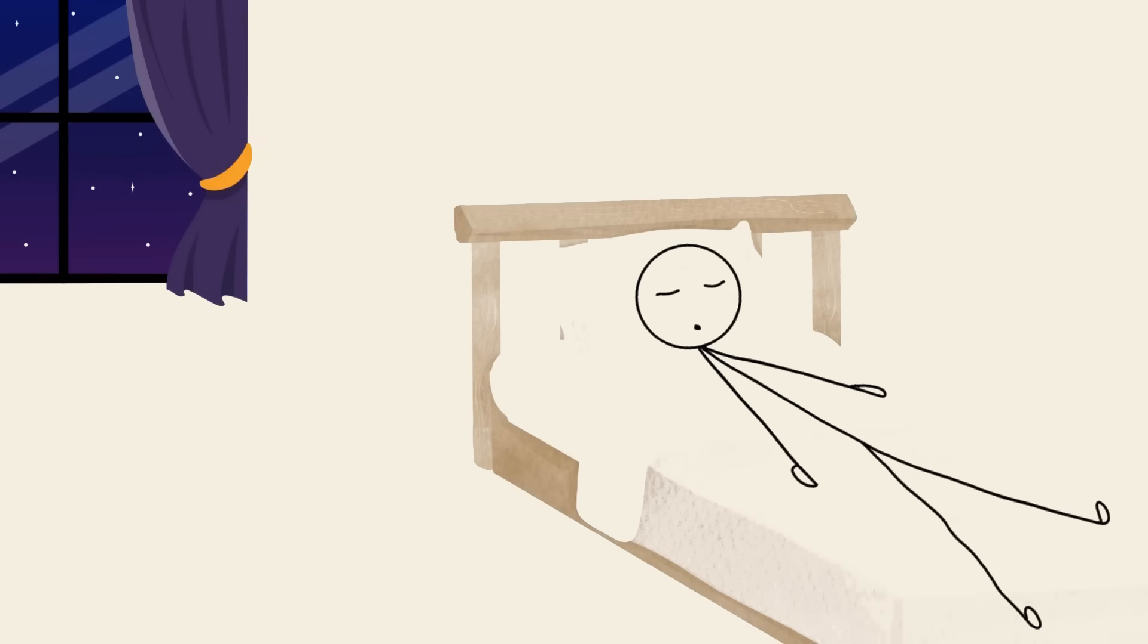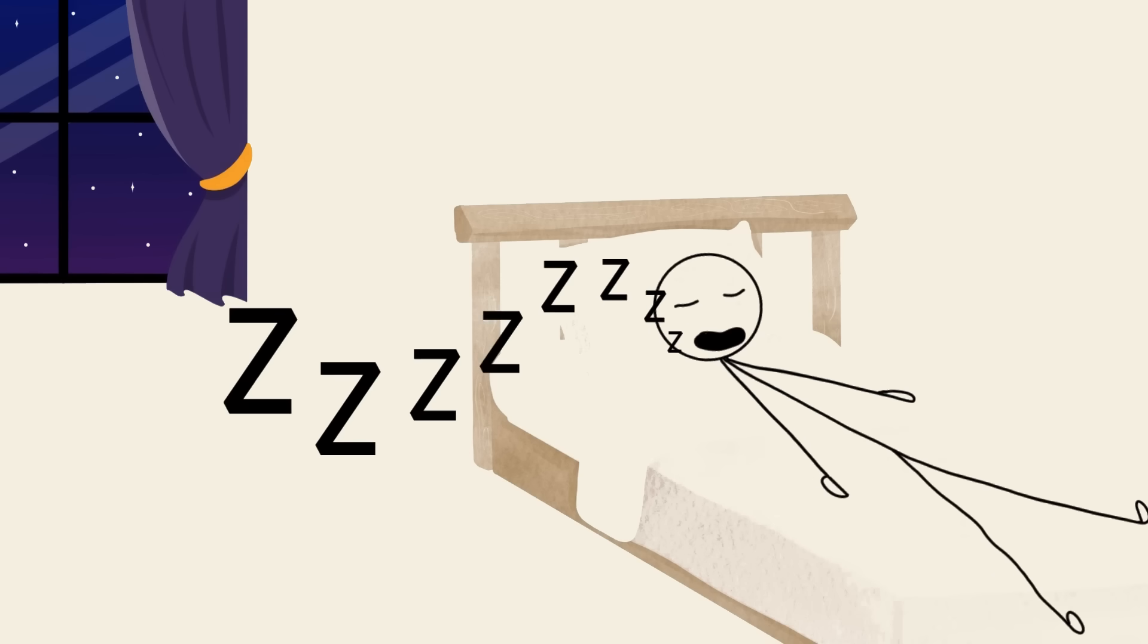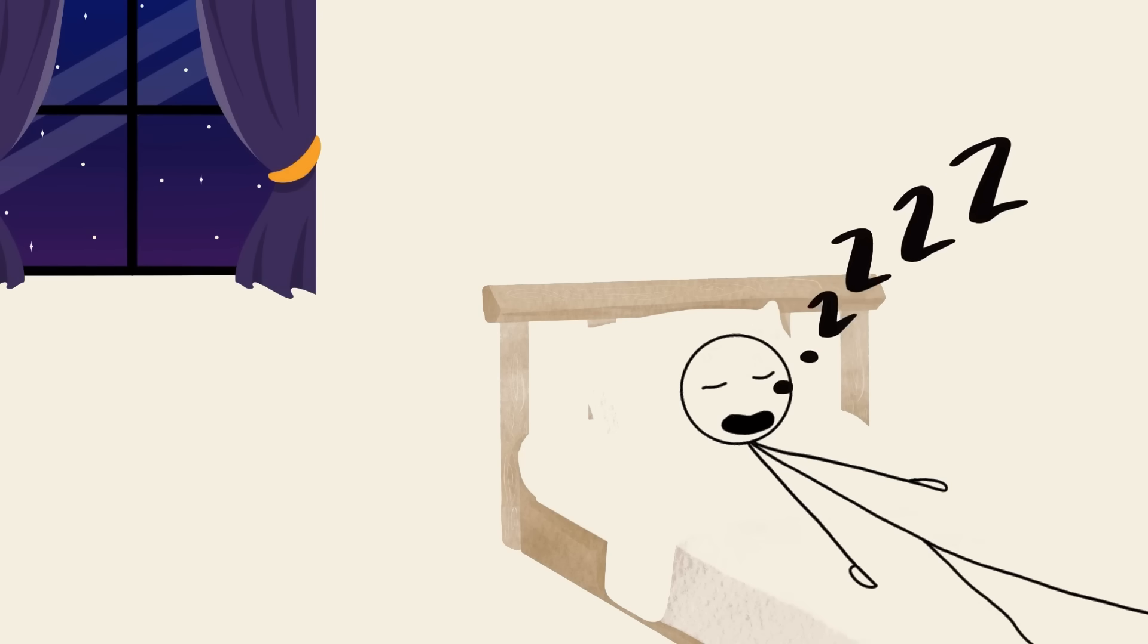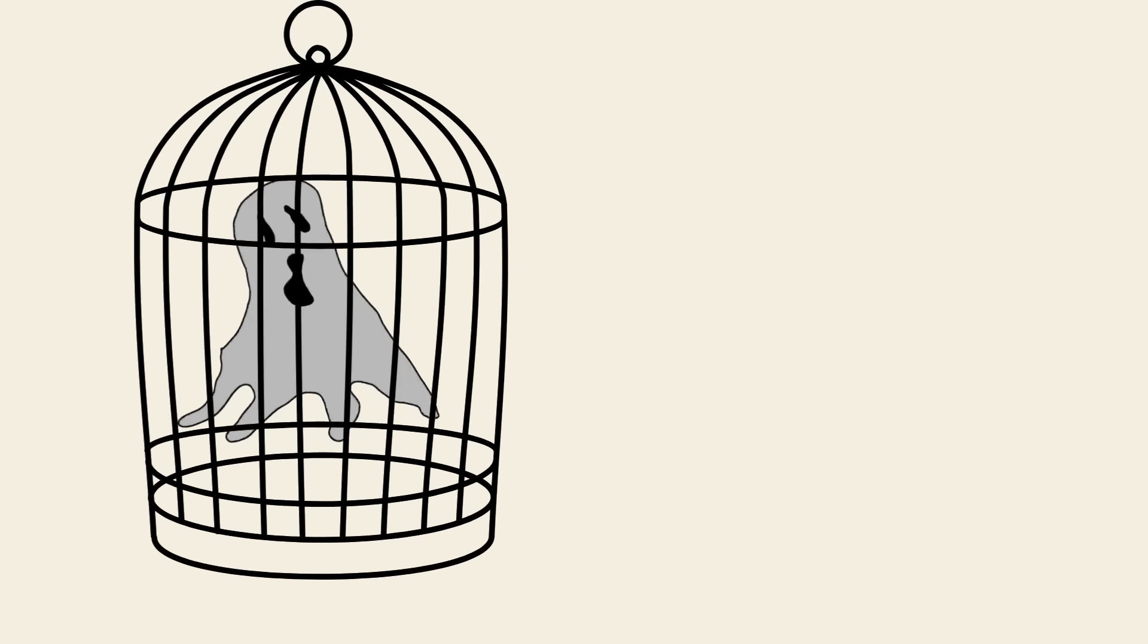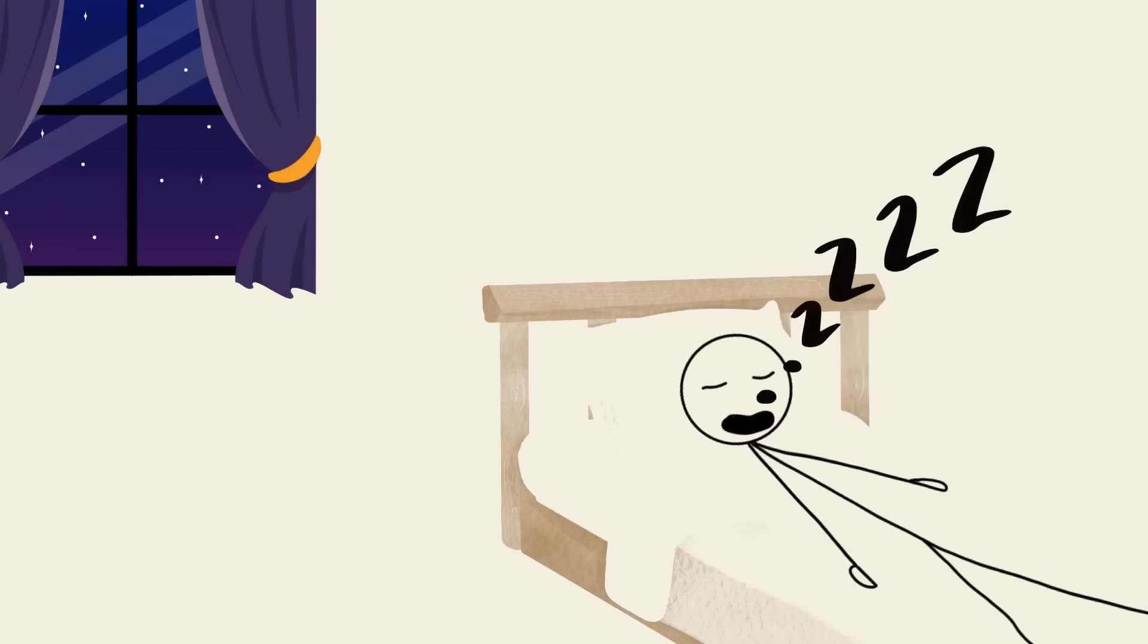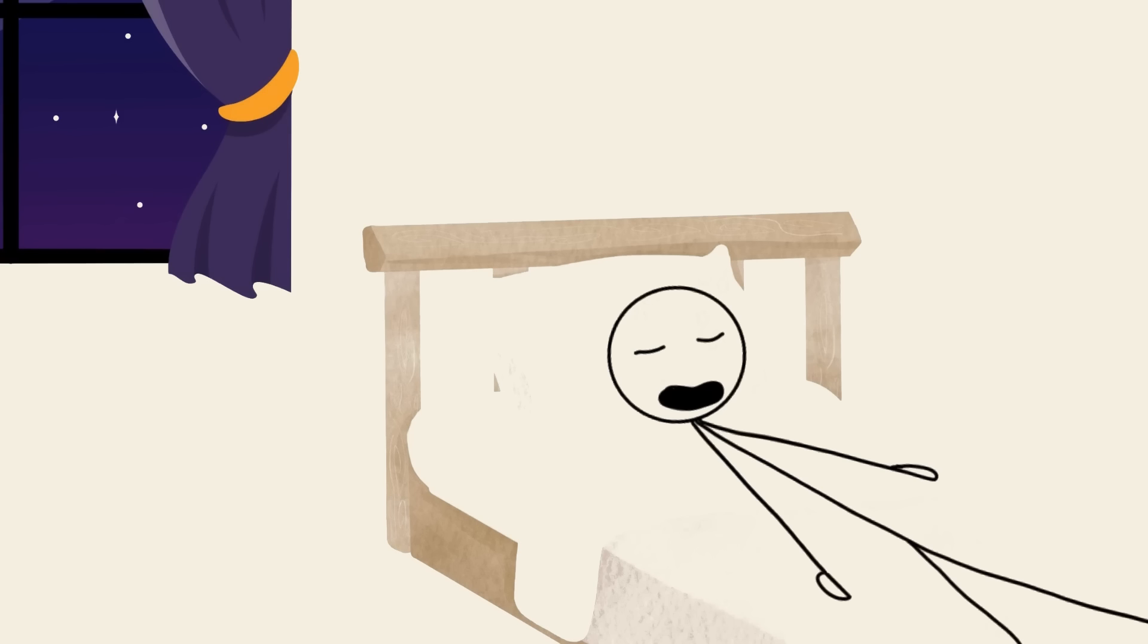Catathrenia. Ever heard of sleep-related groaning? It's called Catathrenia, and it's as strange as it sounds. People with this glitch produce long moaning exhalations during sleep, like a spooky ghost trapped in a body. It's different from snoring, because it usually happens during deep REM, and involves breath-holding, followed by a low,